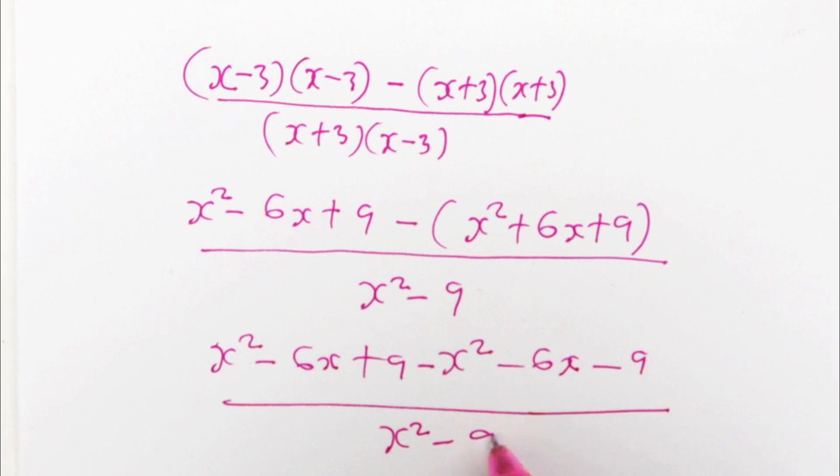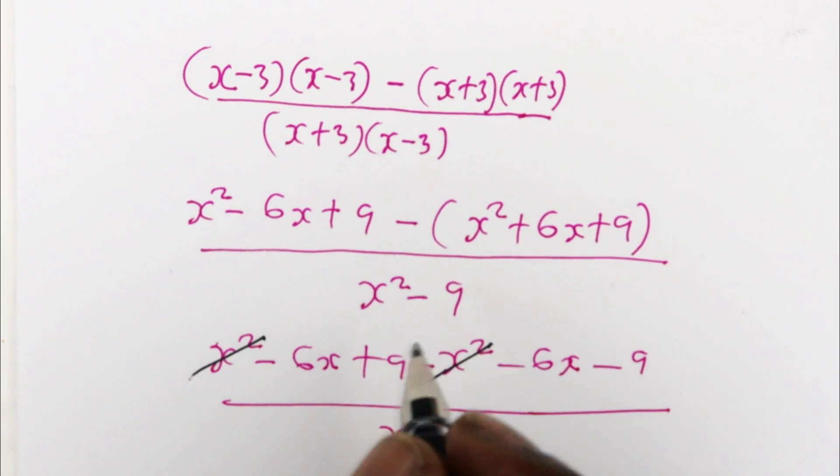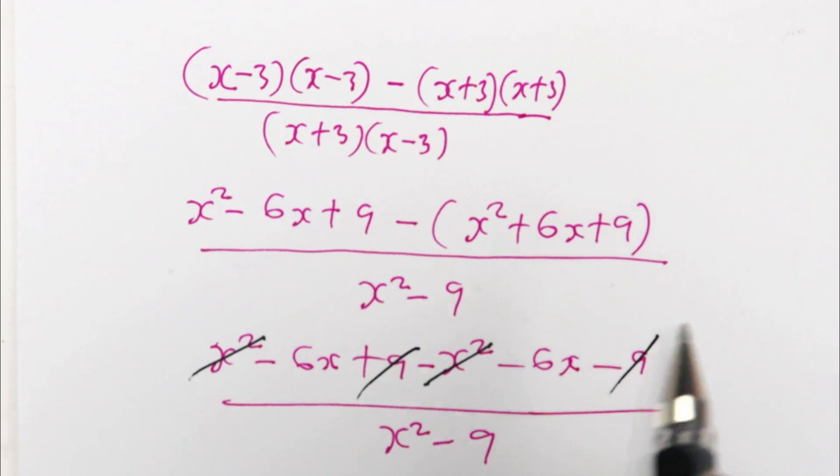So in the numerator, let us see what we can cancel out. You have x² - x².